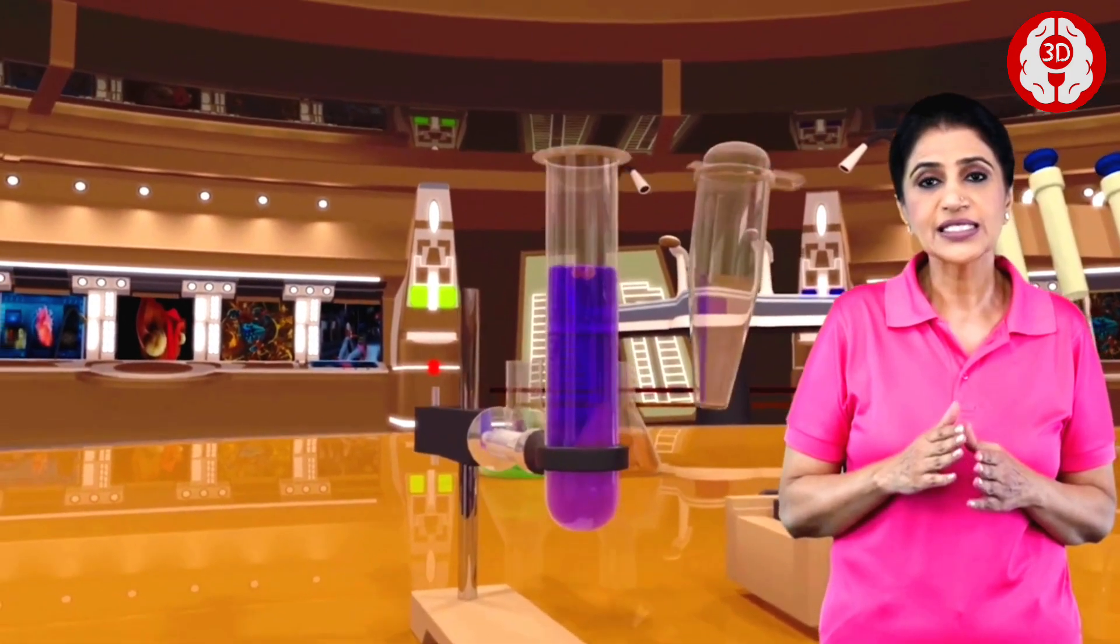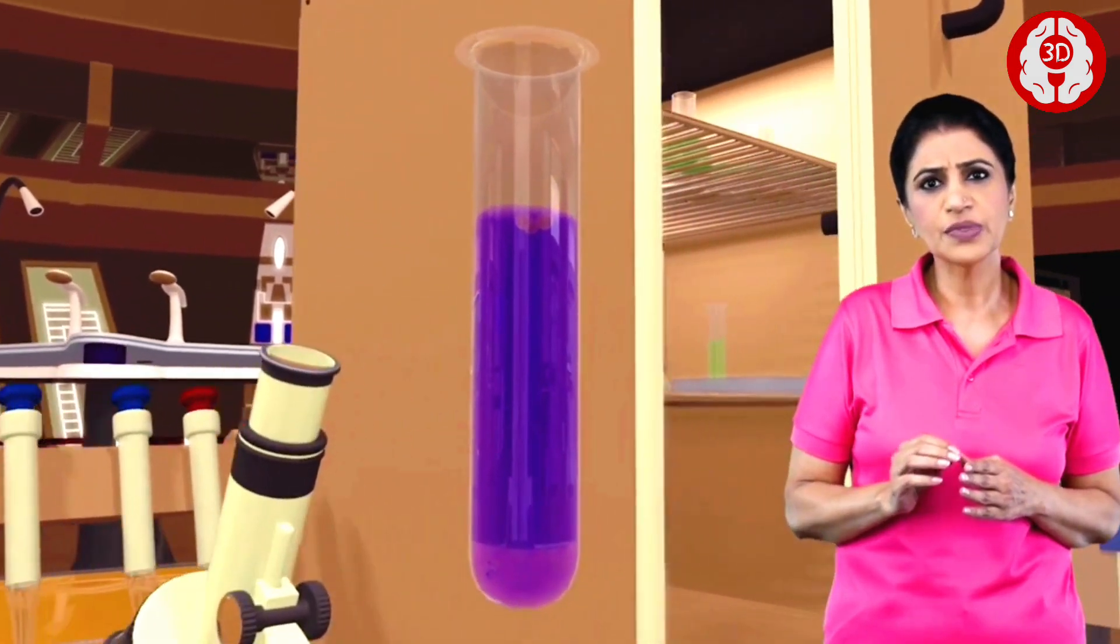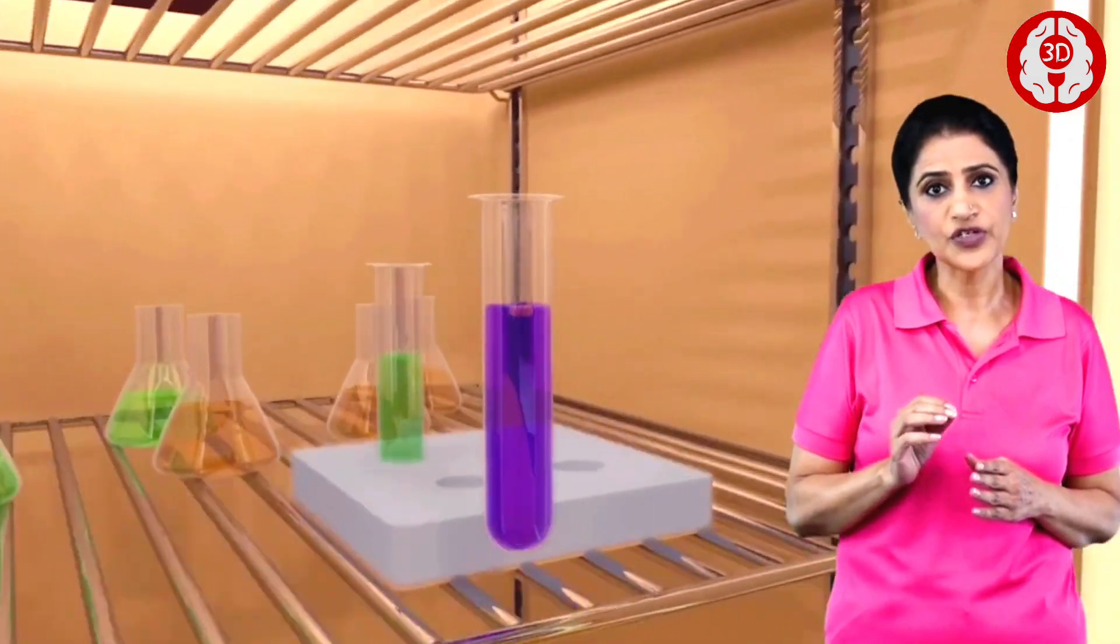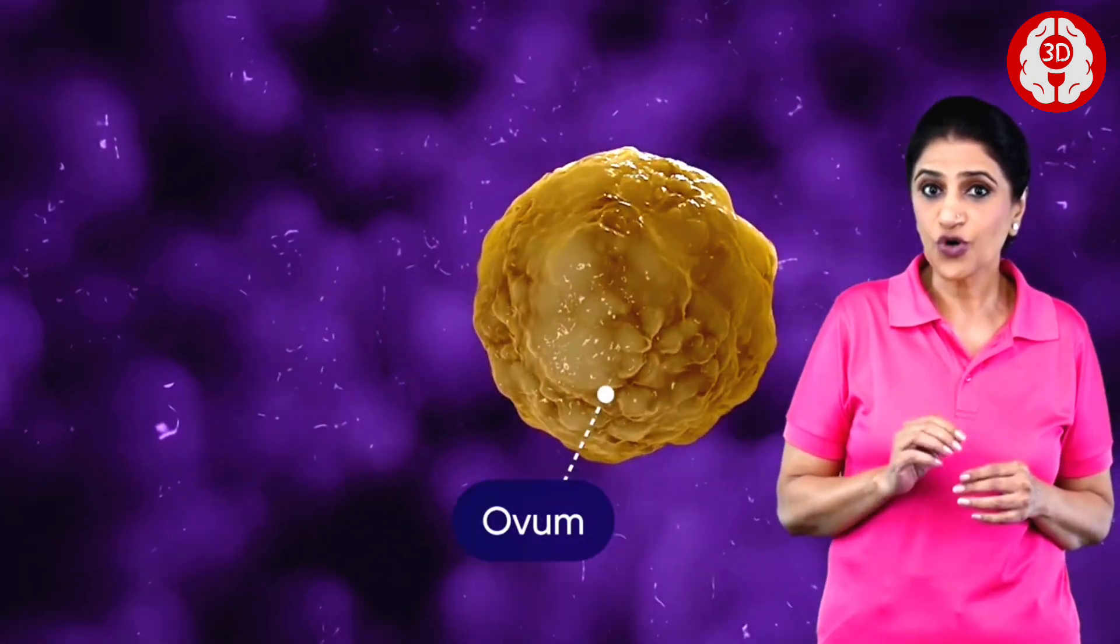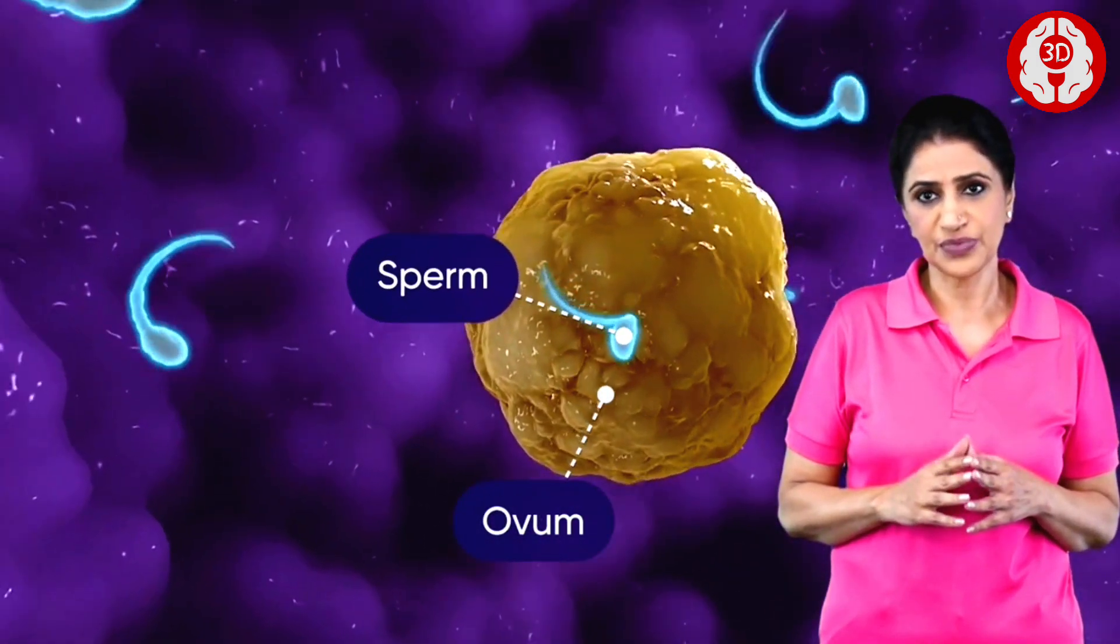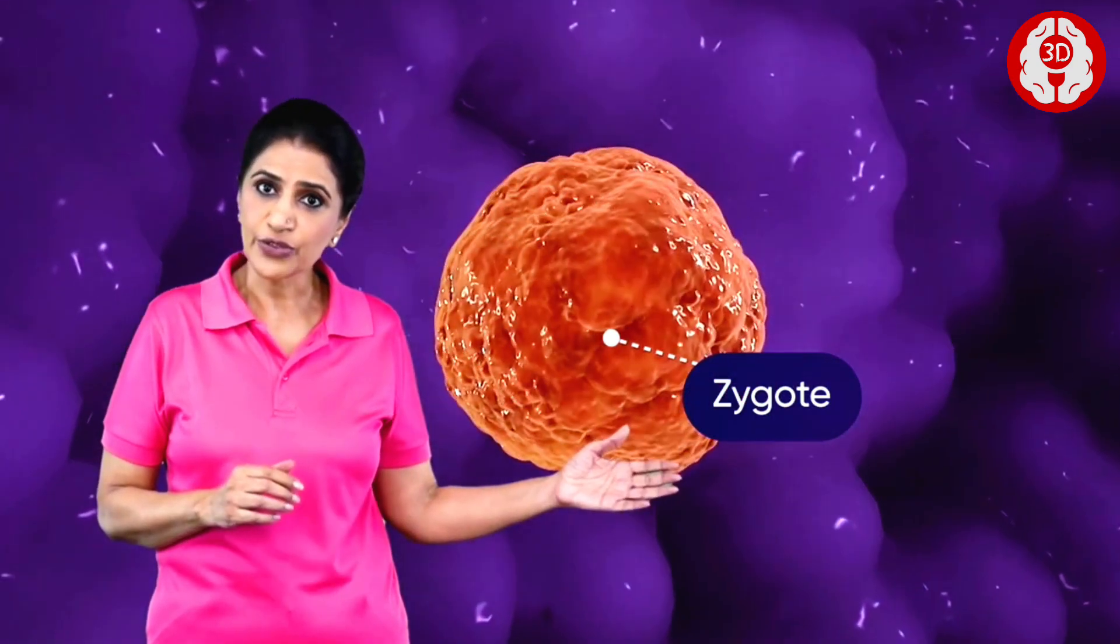This test tube is now placed in an incubator to provide the optimum temperature required for fertilization. A zoomed-in view inside the test tube shows the ovum surrounded by sperms. A single sperm fertilizes the ovum and forms the zygote.